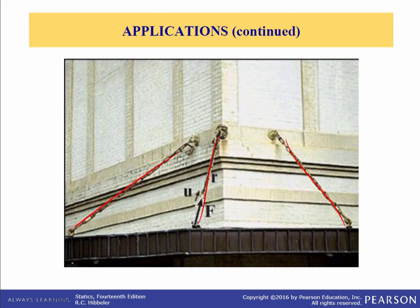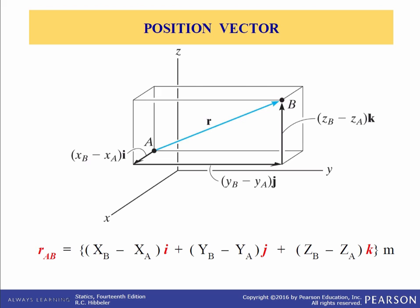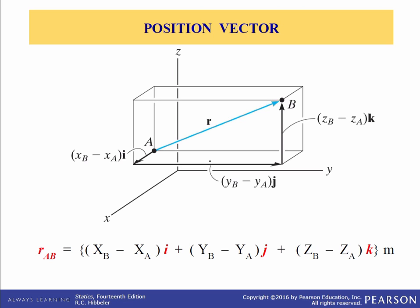Now in this section I'll introduce the concept of a position vector. It will be shown that this vector is of importance when you are formulating a Cartesian force vector directed between any two points in space. Throughout this book we use a right-handed coordinate system, with the positive Z-axis directed upward measuring height or altitude, so the XY axes lie in the horizontal plane. A position vector r is defined as a fixed vector which locates a point in space with respect to another point — in this case locating point B with respect to point A.